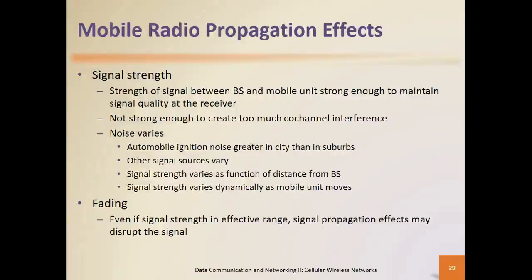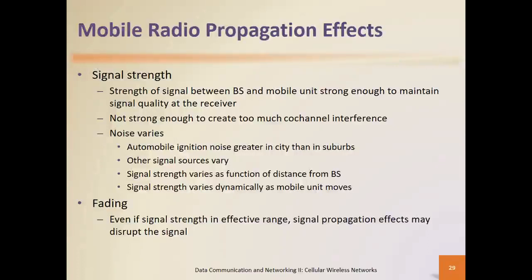If the signal is not strong enough, do we need to create other transmission frequency channels? When the signal is not strong enough, it creates too much co-interference and large interference. The signal cannot maintain quality between two mobile units within a given cell. Noises may vary — automobiles, especially ignitions — and noise can be greater in cities than suburbs, creating more interference. That's a challenge with signal propagation.